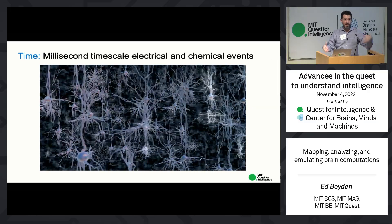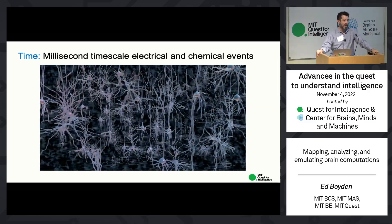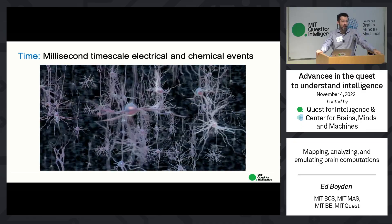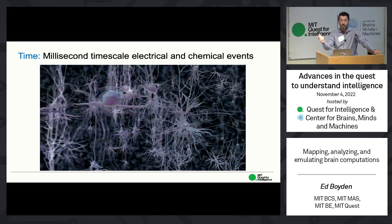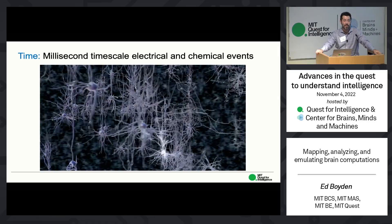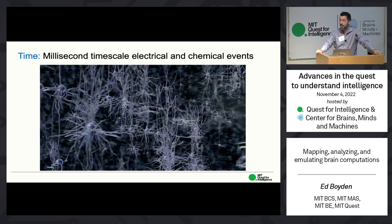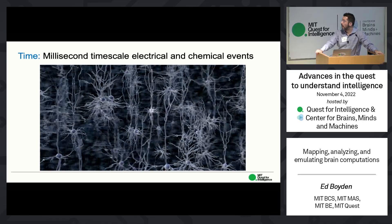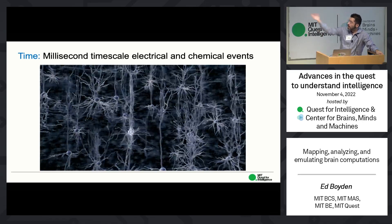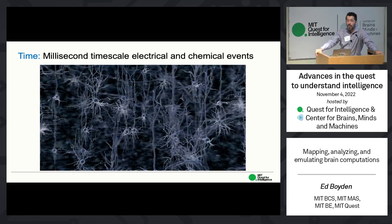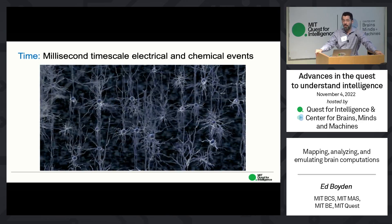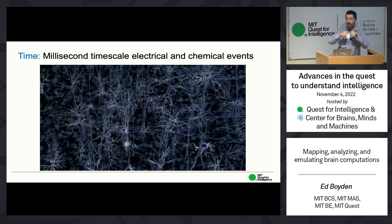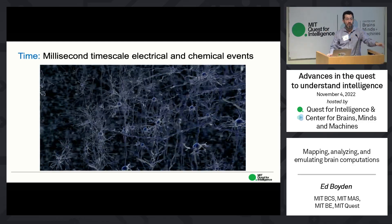The other issue in understanding the brain is not just the spatial complexity but the enormous temporal complexity. Brains can develop many of their functions — and dysfunctions — over long periods of time: months, years, even decades sometimes, whether it's learning a skill or a language. But the quantum building blocks of brain computations are very, very short events — millisecond timescale electrical pulses within brain cells and chemical exchanges between brain cells.